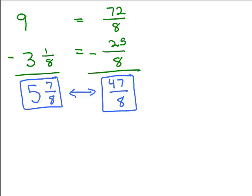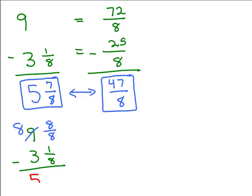You could also use the borrowing method. Borrow 1 from 9, writing it as 8 eighths in the fraction part, giving 8 and 8 eighths minus 3 and 1 eighth. Then 8 minus 3 is 5, and 8 eighths minus 1 eighth is 7 eighths — giving 5 and 7 eighths. All methods lead to the same answer. It doesn't matter if you write it as 5 and 7 eighths or 47 eighths.